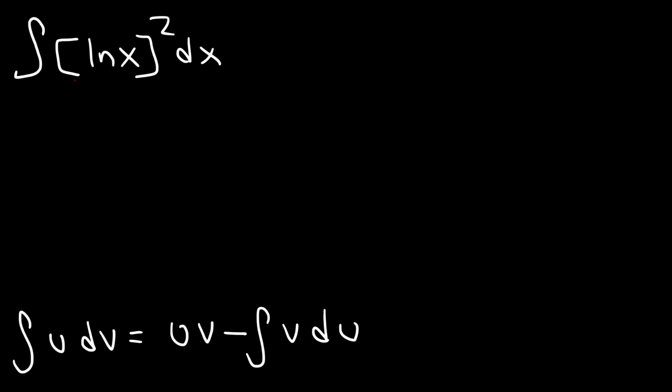Now what we're going to do is make u equal to ln x squared. Now if u is equal to this, what is du? To find the derivative of ln x squared we need to use the chain rule.